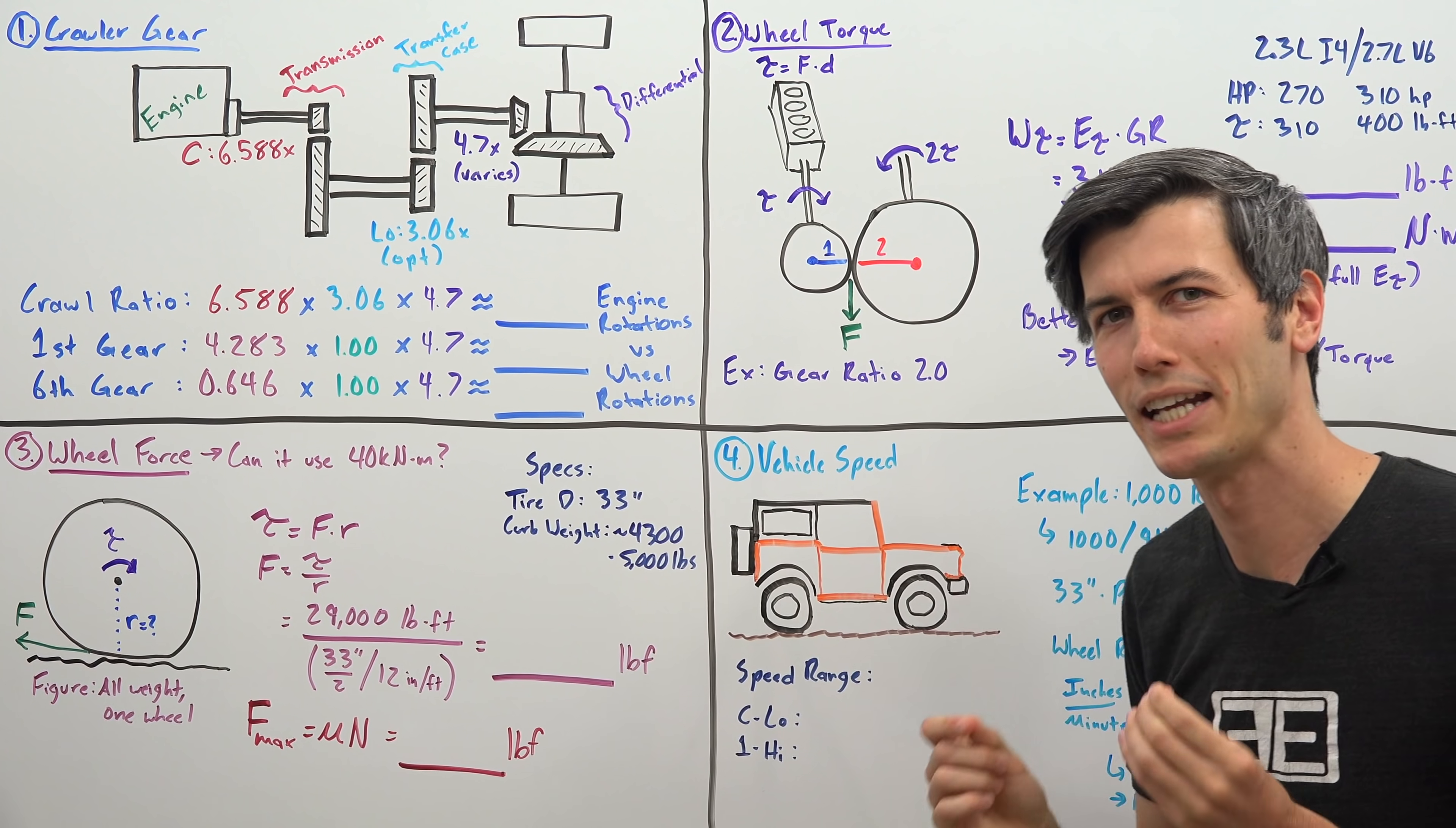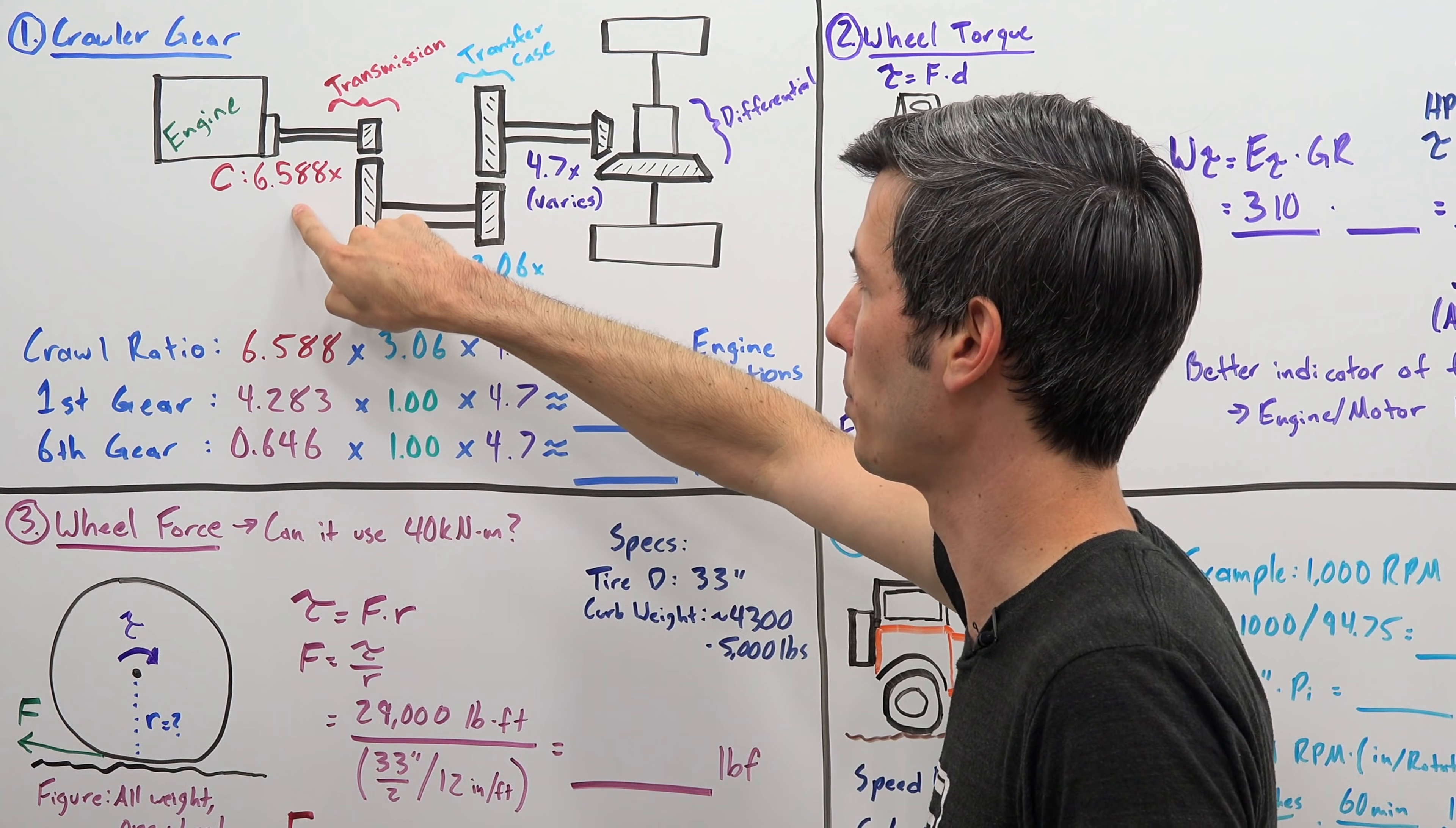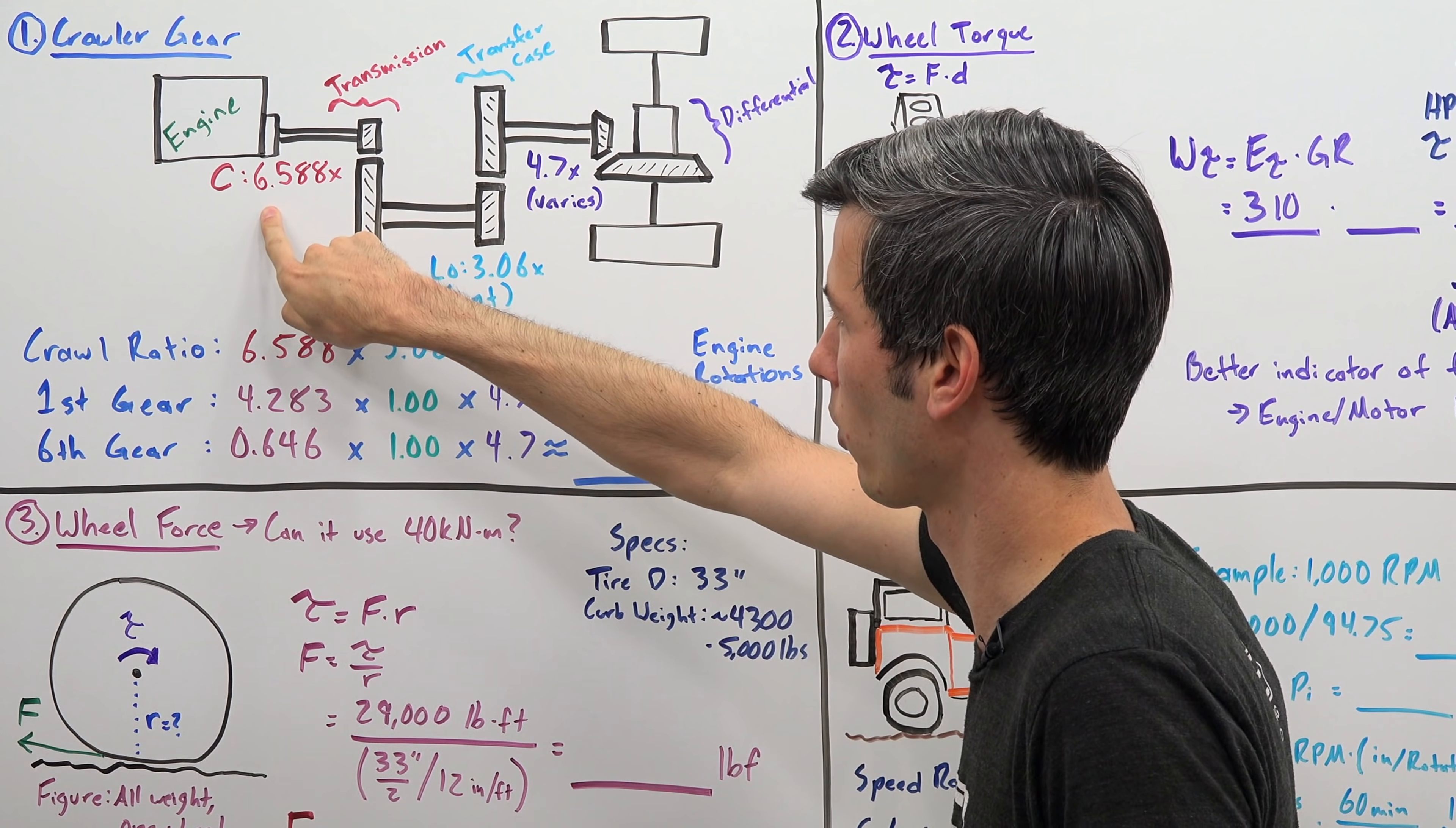So let's say you have a manual transmission Ford Bronco. Well, from the engine you send that torque to the transmission, and so if you're in this crawler gear, well the engine speed is going to be 6.588 times greater than that output gear speed.